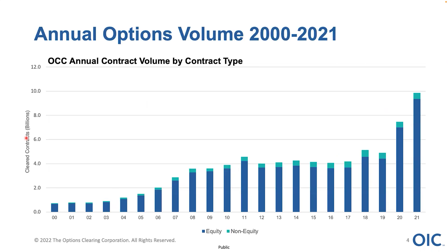Here is a chart of annual options volume over the last 20-plus years. Options actually started trading in 1973 on the Chicago Board Options Exchange. On the very first day of trading, they traded something like 940 contracts. Options volume has really skyrocketed and taken off over the last 20 years, and even more so lately.